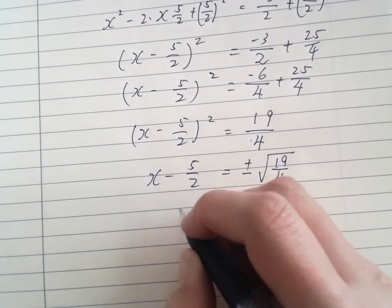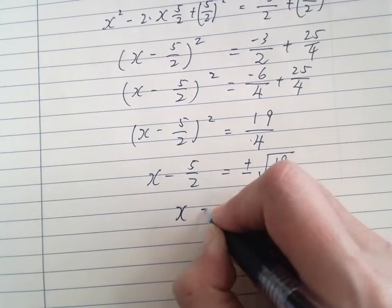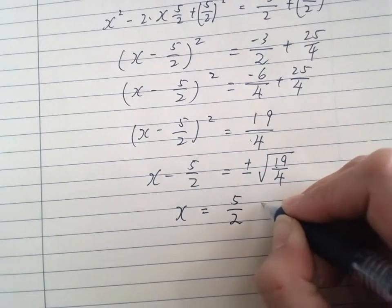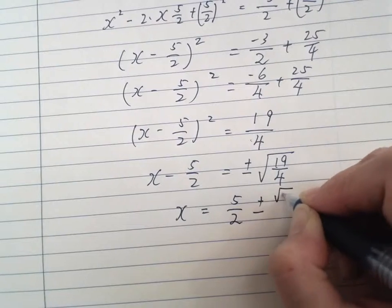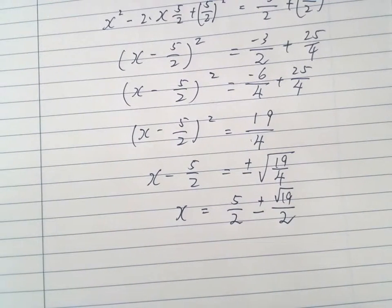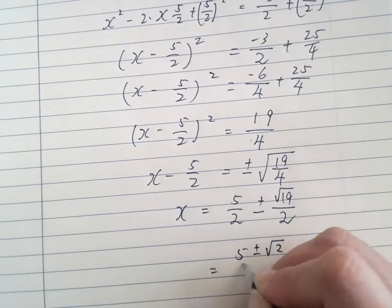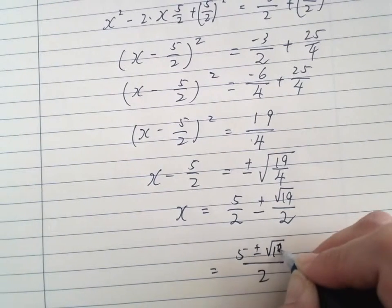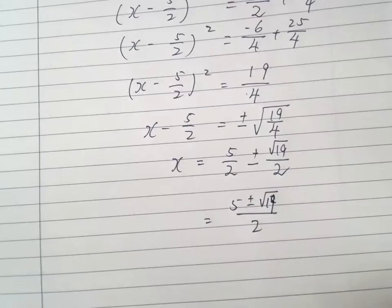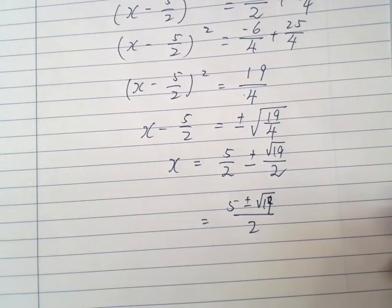So we have x = 5/2 ± √19/2. To make it look even better, x = (5±√19)/2. That's handsome! That's how completing the square is done.